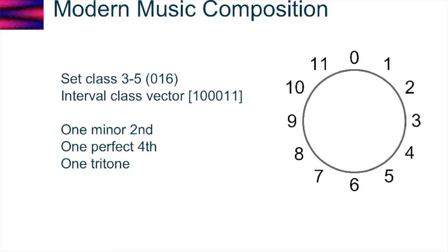So in today's example we're going to be using set class 3-5. And that is 0, 1, 6. And so what does 0, 1, 6 mean? Well, if we look over to the right here to our clock diagram, that gives you the chromatic scale in terms of semitones. And so 0 being, for example, could be a C, which normally it is set to C. 1 is going to be C sharp or D flat, and 2 is D, and then you just march yourself around back up to C, going through the chromatic scale.